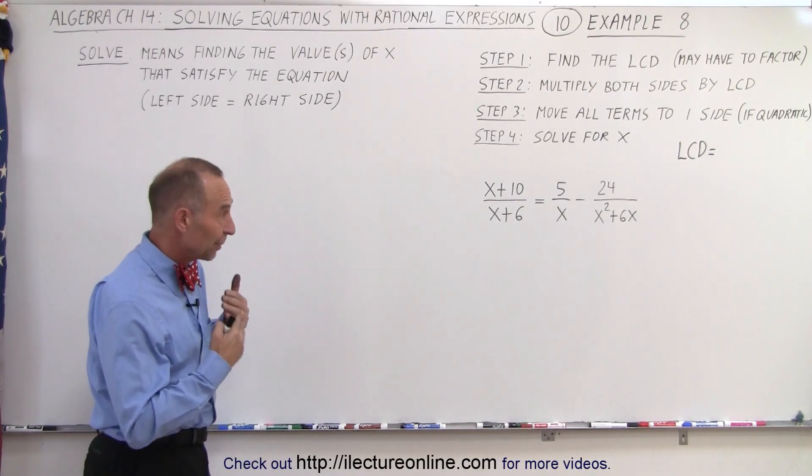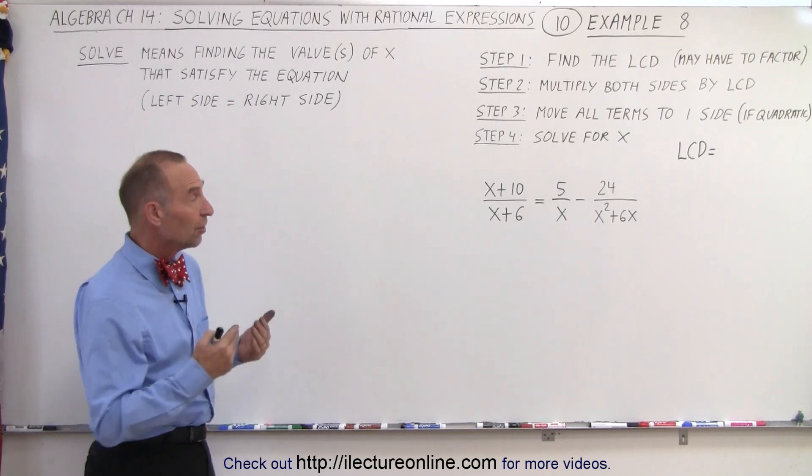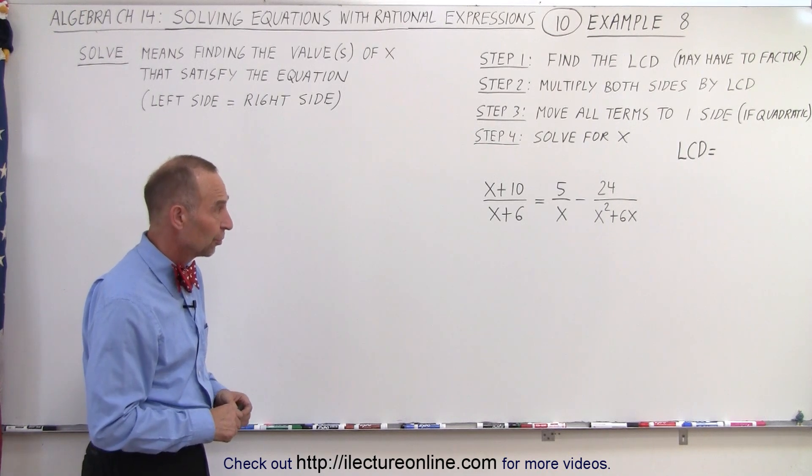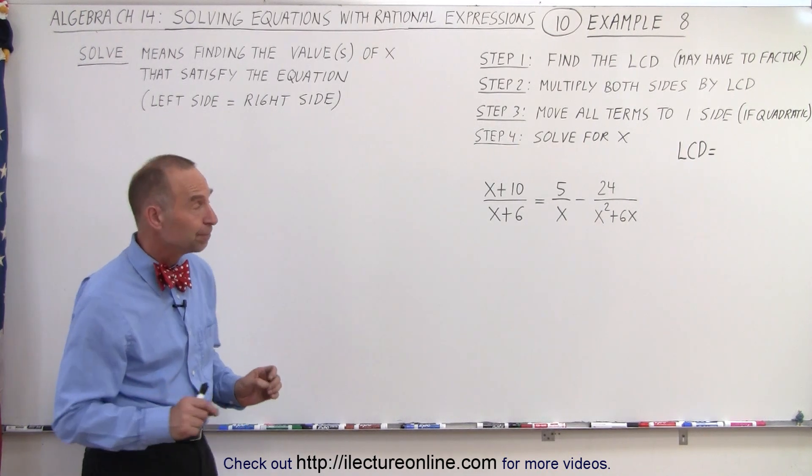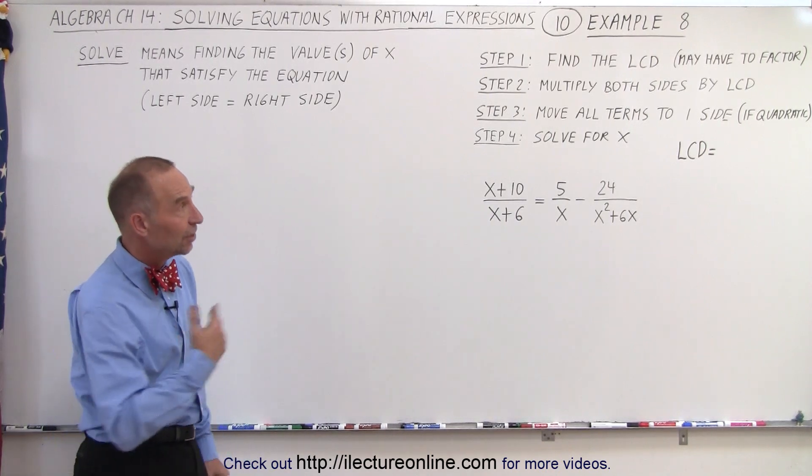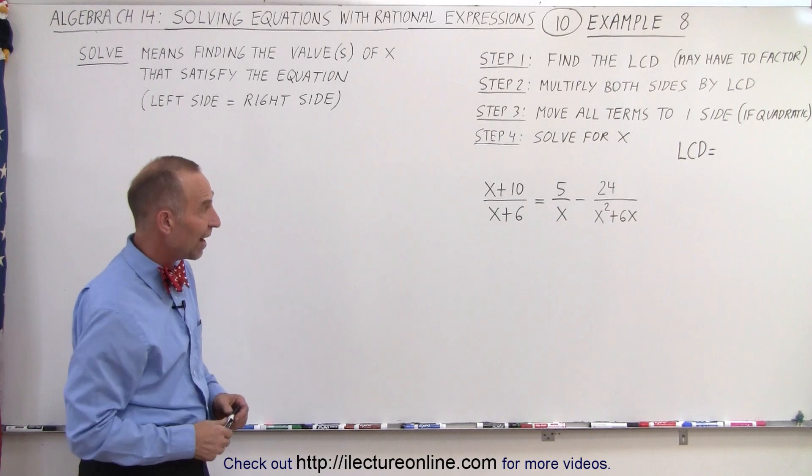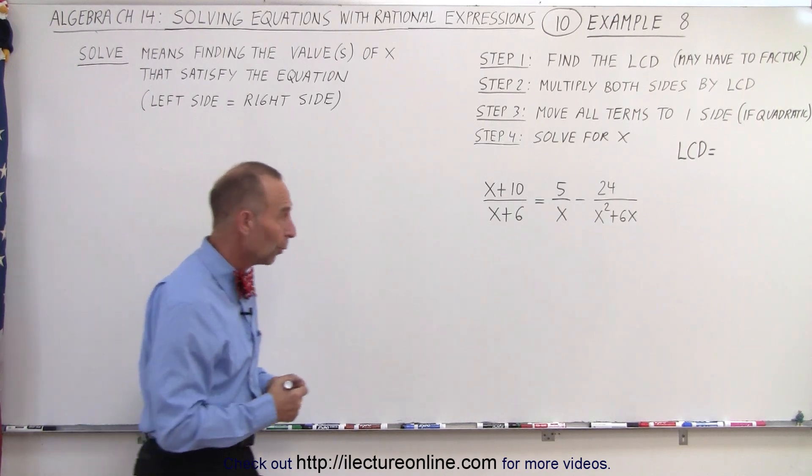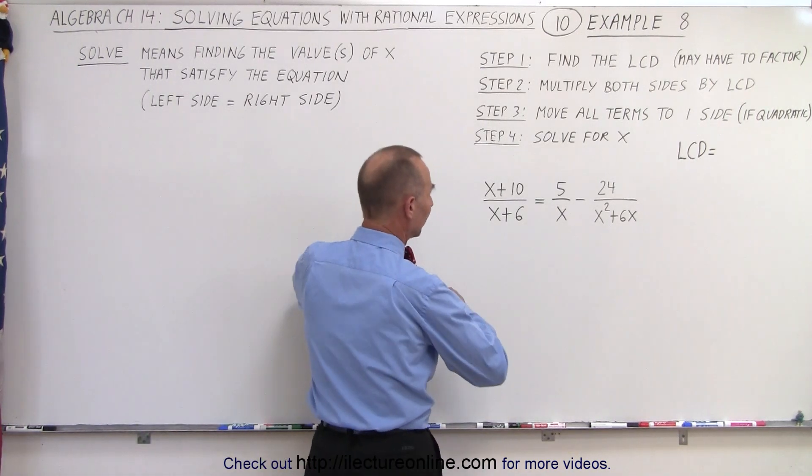In our next example we have the variable x both in the numerator and the denominator of some of our terms. So how do we solve that problem? The same way as always—we find the lowest common denominator. In this case we're going to have to factor before we know what our lowest common denominator is.